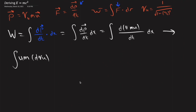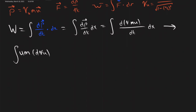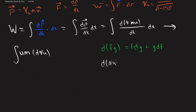So now we have this, and we get to use the product rule. For reference, the product rule for differentials gives d(fg) equals f dg plus g df, where both are functions of x — we're taking the differential. So applying this here, d(gamma u) is equal to u d(gamma) plus gamma du.